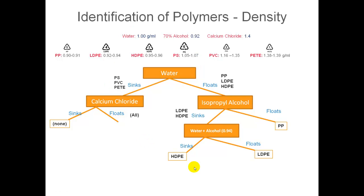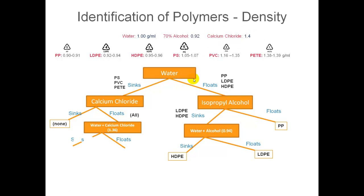So how do we tell them apart? We do the same thing to calcium chloride that we did to isopropyl alcohol — we start adding water. Since water has a lower density than calcium chloride, it lowers the density of the solution. When the solution reaches a density of around 1.36, that density will be lower than PET's density, and PET will sink first. Now we've isolated PET, and we're left with polystyrene and polyvinyl chloride.